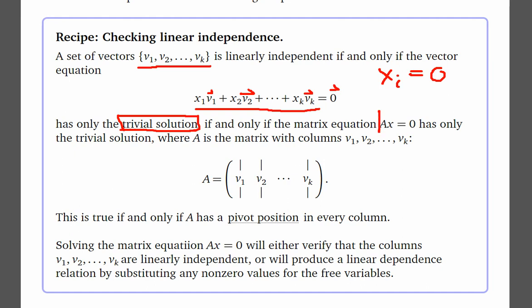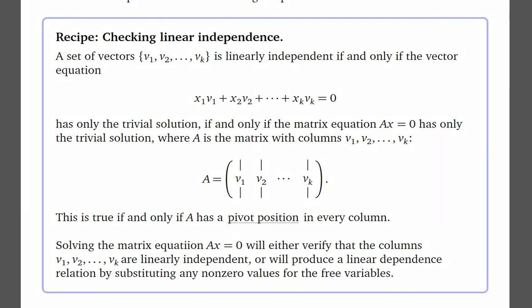This is the exact same thing as solving the homogeneous equation and seeing if that matrix equation has only the trivial solution. We can treat vector v₁ as the first column of A, v₂ as the second column, and vₖ as the k-th column of A. Using row reduction: if A has a pivot position in every column, then the set of vectors is linearly independent.